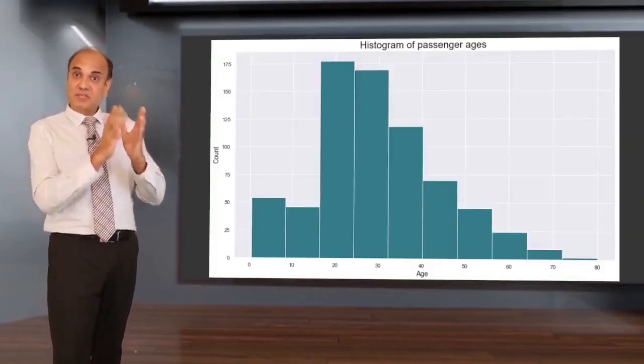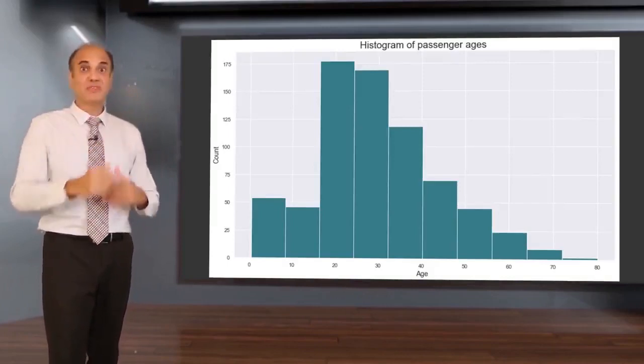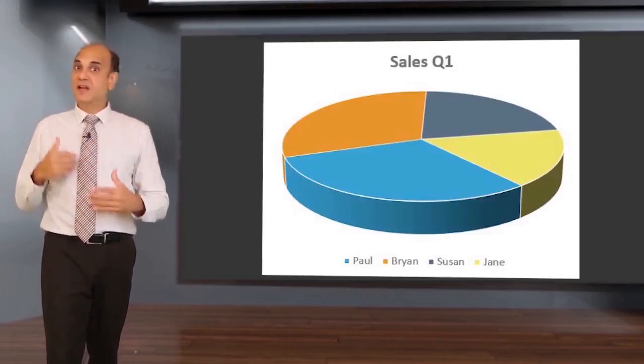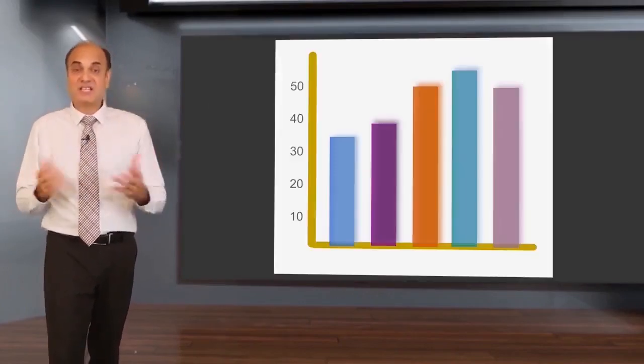If you are dealing with continuous data, you might use histograms. If you are dealing with attribute data, you may use pie charts, Pareto charts, or bar charts.